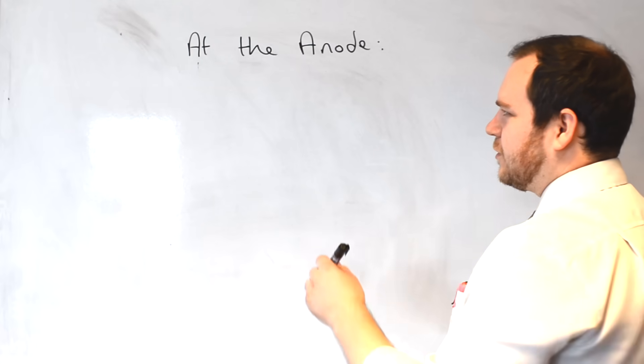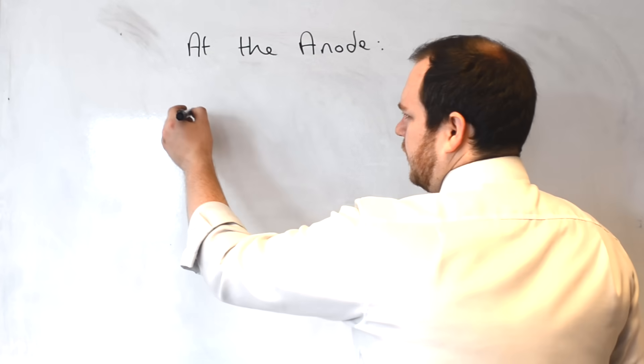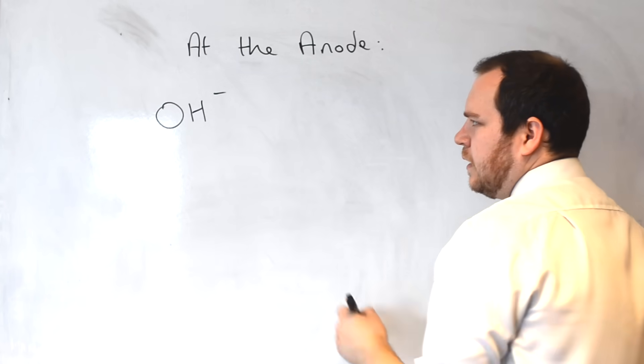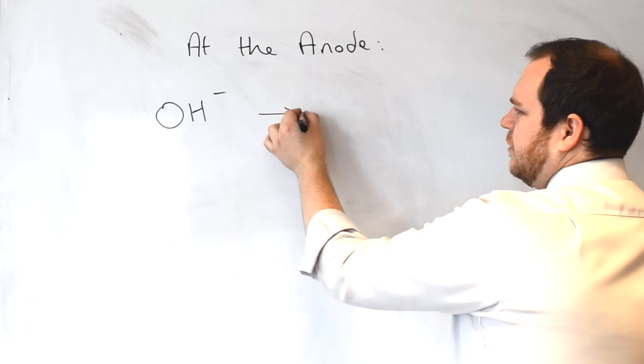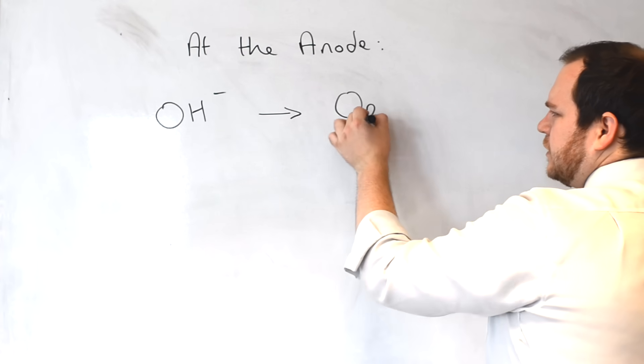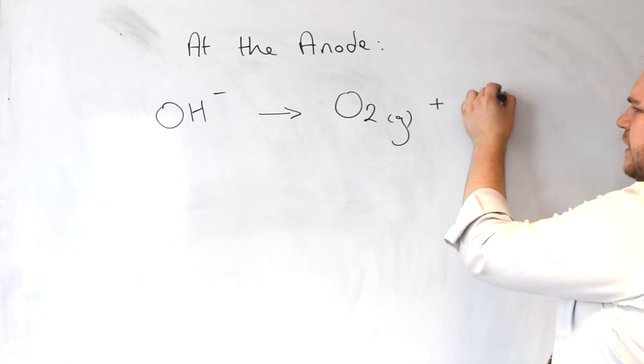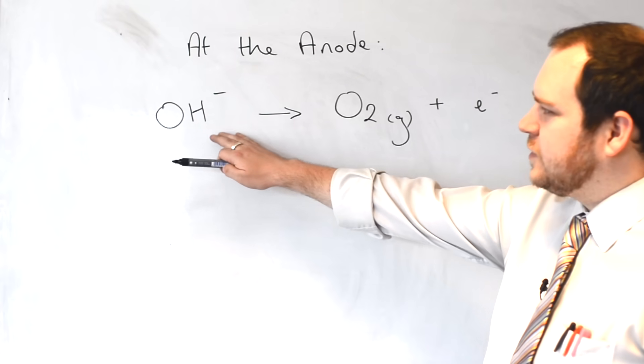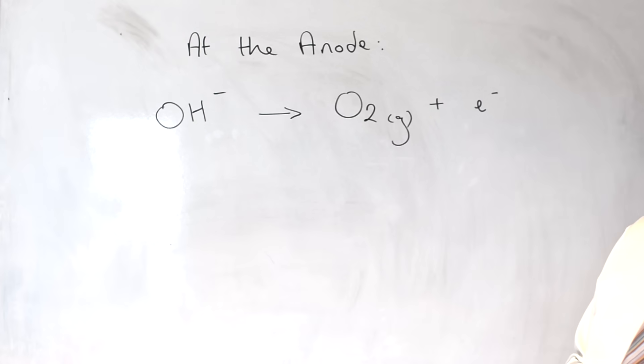At the anode, we said we had oxygen being formed. Now these oxygen molecules are formed from the hydroxide ions in water. Now once again, because it is at the anode, we have an oxidation reaction taking place where we have a loss of electrons. We know that the product is oxygen as a gas and we also get electrons given off. However, the question is what has happened to this hydrogen within the hydroxide ion. And with oxidation reactions involving hydroxide ions, we get water formed as an extra product. And that goes back into the solution within the electrolysis cell.